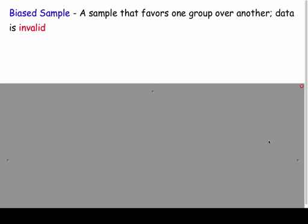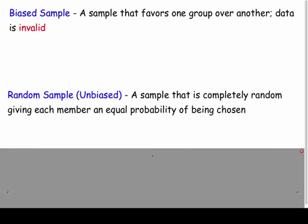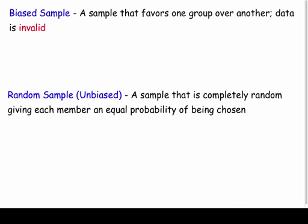There are two types of samples: a biased sample and an unbiased sample. We want to avoid biased samples because that's the sample that favors one group and makes the data invalid. For example, if I wanted to find the favorite sport of all kids at the high school and only asked the basketball players, that's biased — most will say basketball.